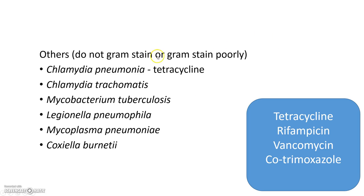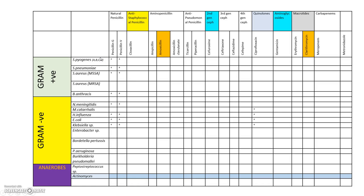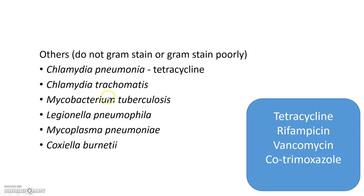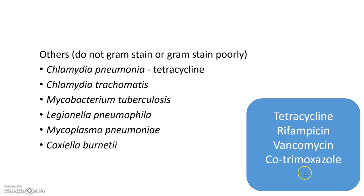There are also other pathogens that do not Gram stain or stain poorly — for example, Chlamydia pneumoniae and Chlamydia trachomatis, for which tetracycline must be used. Others include Mycobacterium tuberculosis, Legionella, Mycoplasma pneumoniae, and Coxiella burnetii. Antibiotics that can treat some of these include tetracycline, rifampicin, vancomycin, and cotrimoxazole.